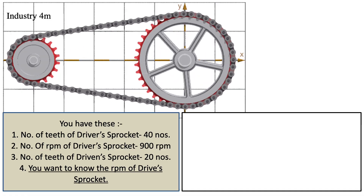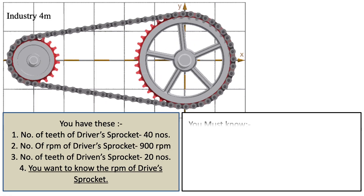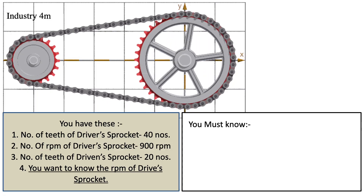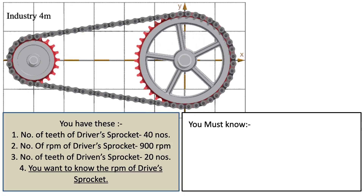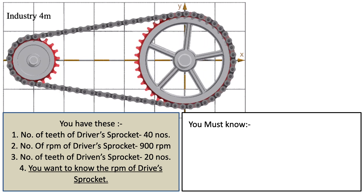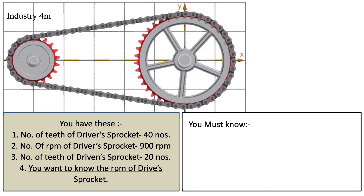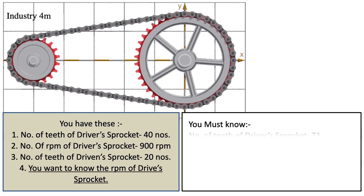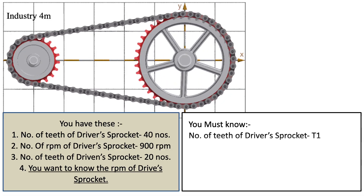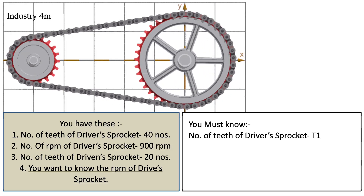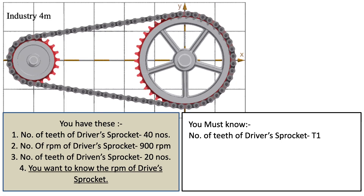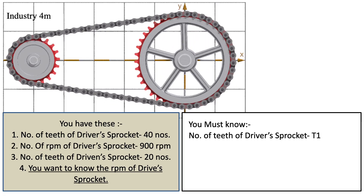You must know the number of teeth of the driver's sprocket, called T1, the RPM of the driver's sprocket, called N1, the number of teeth of the driven sprocket, called T2, and we want to know the RPM of the driven sprocket, called N2.